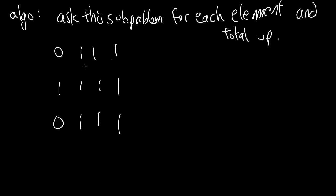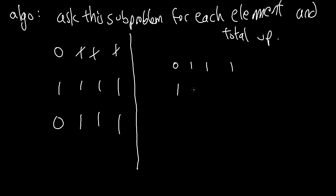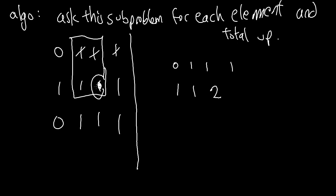Let's walk through our input. We have zero — you can't create any new squares with zero. Then we create one new square for each subsequent one. Now for this case, we can create a square of size two, but also a square of size one, so this will be two. Similarly, the next will also be two, then zero, one, two. And as we discussed, the last element will be three.